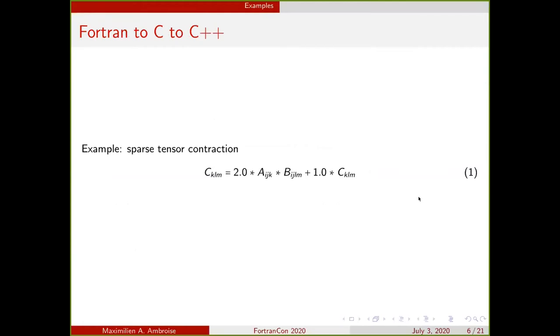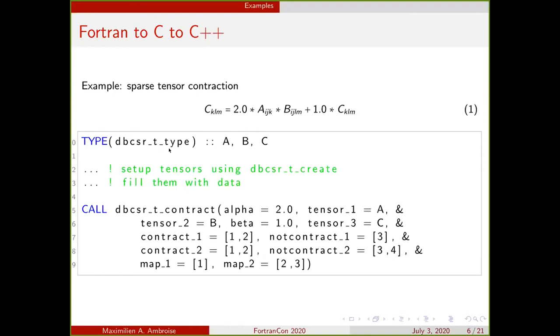I will show you an example of how the tensor contraction looks like in Fortran. We would like to do this tensor contraction where we have two input tensors and an output tensor C. In Fortran, we set it up with TYPE DBCSR_T_TYPE, A, B, C. Then we call some functions to create them and fill them. We can contract them by calling the DBCSR_T_CONTRACT function, which takes those arguments. We have the alpha input tensors, and how it's contracted is dictated by the contract and notcontract arrays and the map1 and map2 arrays. This shows which indices are contracted in the first one, which are not contracted, and so on. Finally, how the indices of the output tensor map to the different indices of the input tensors.